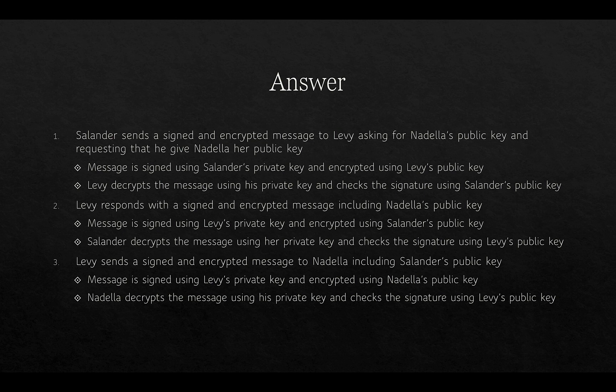Describing the sequence of messages: Salander sends a signed and encrypted message to Levy asking for Nadella's public key and requesting that he give Nadella her public key. The message is signed using her private key and encrypted using Levy's public key. Levy decrypts that message using his private key and checks the signature using Salander's public key. Levy then responds with a signed and encrypted message including Nadella's public key, signed using Levy's private key and encrypted using Salander's public key. Salander decrypts the message using her private key and checks the signature using Levy's public key.